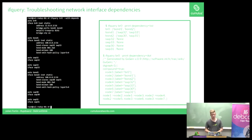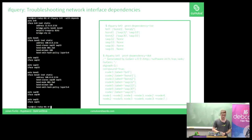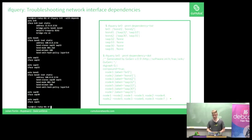This example shows the capability we added to ifquery. We added an option to let you query the dependencies of a specific interface, and you can see the results in plain text, JSON format, or dot format.